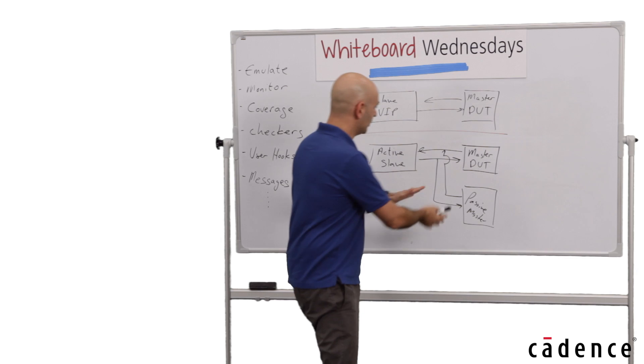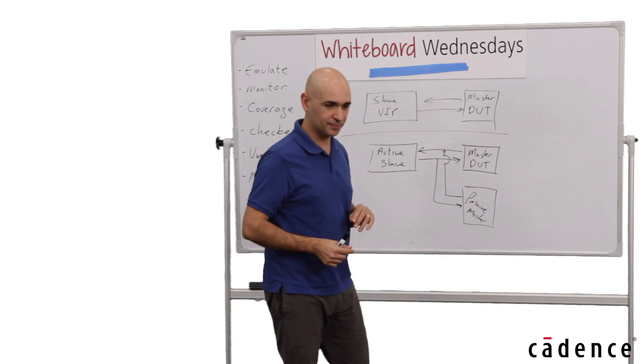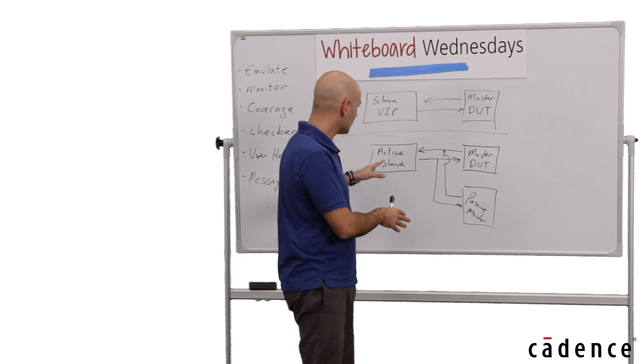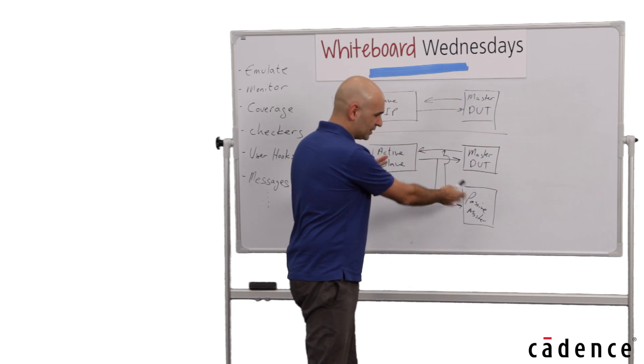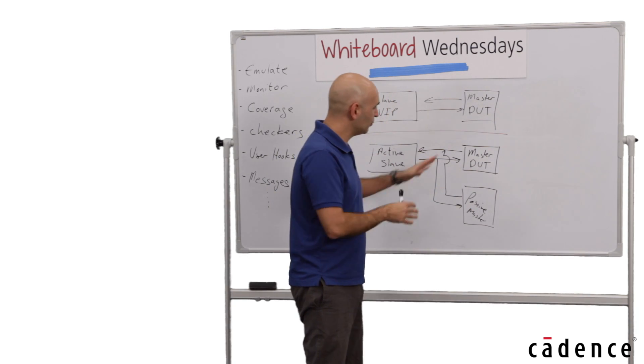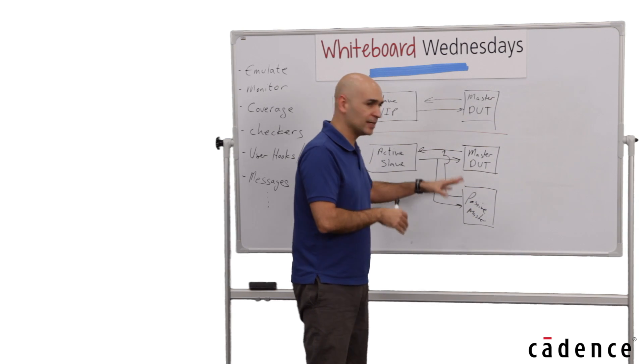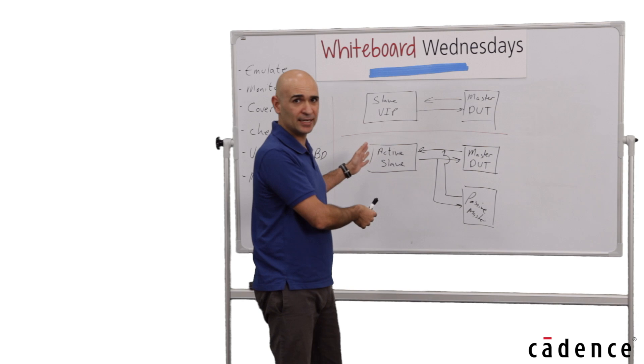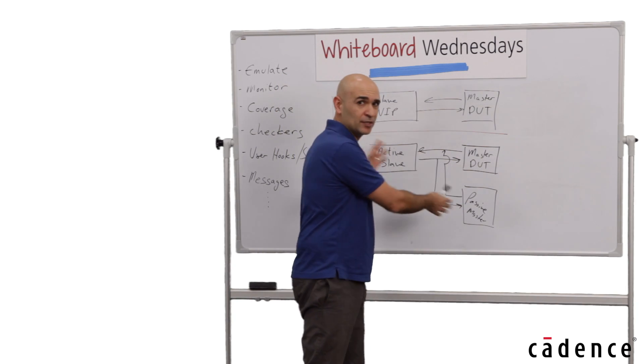So why is it so important to separate these two agents? First, they have different configurations. This one is master, the other one is slave, but they could also be implementing different protocol versions. This could be PCI Express Gen3, this could be PCI Express Gen2. They could have different capabilities.